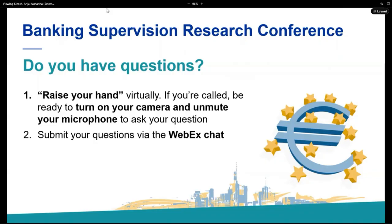Now we have time for four questions — please be as concise as possible. Anatoly Segura from the Bank of Italy: very fast, since it's related to the main point of the discussion — maybe something you should look at is which banks do not signal their capital target and whether they are different and behave differently. That could shed some light on what banks are communicating when they decide to communicate.